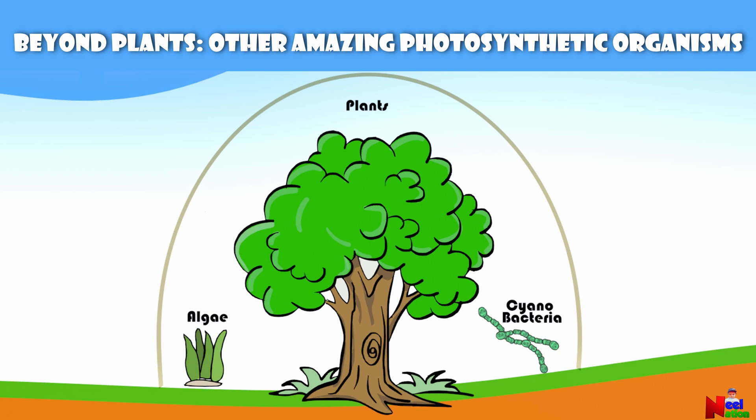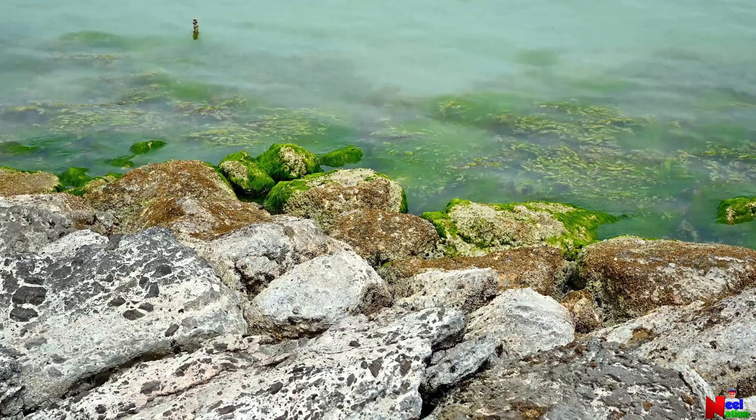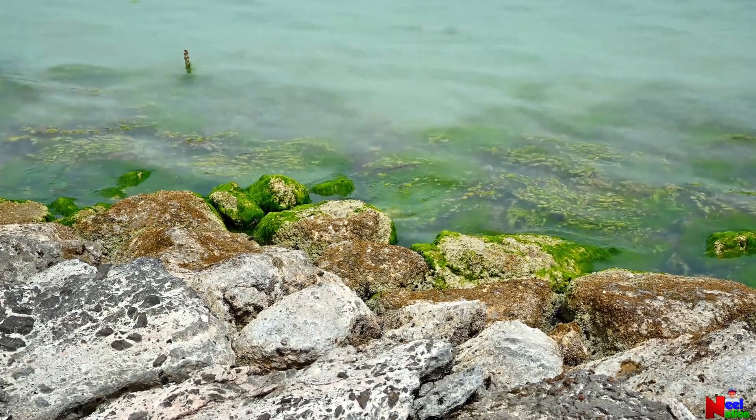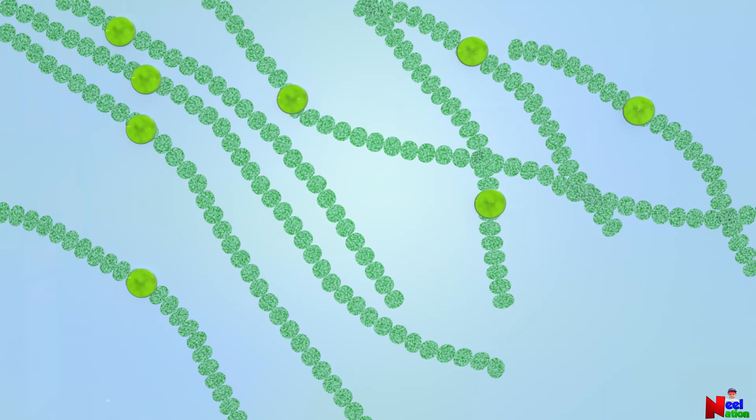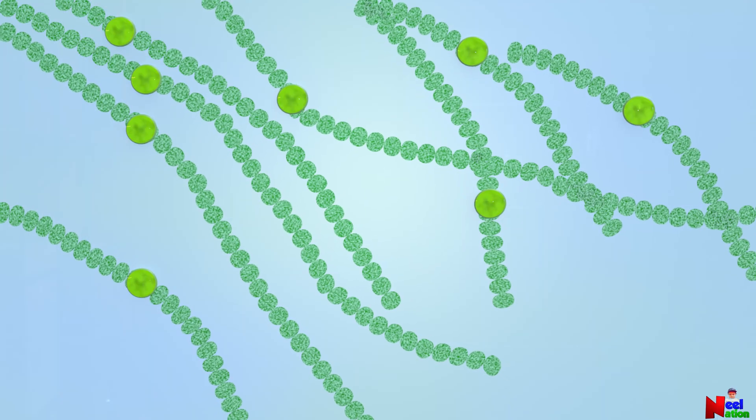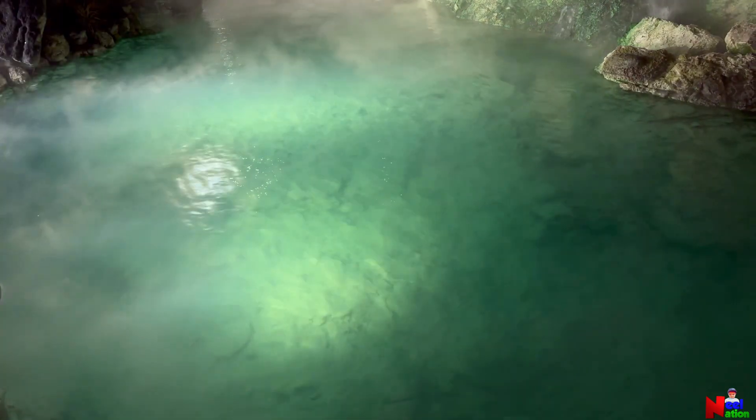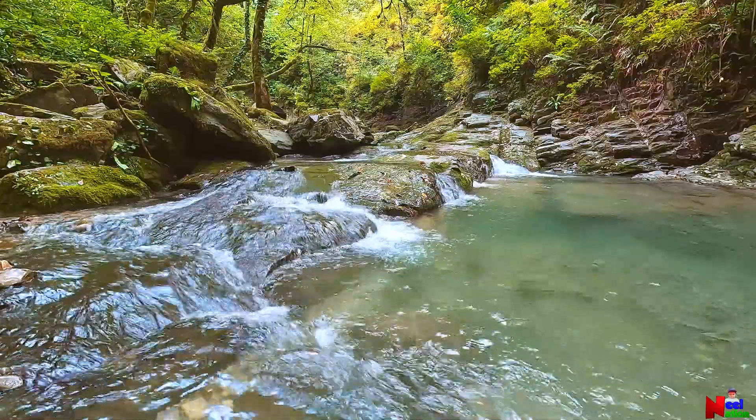While plants are the most familiar, there are other amazing photosynthetic organisms that play a big role in supporting life on earth. These include algae and cyanobacteria. Algae live in water, like ponds, lakes and oceans. They can be very tiny, like little specks, or big like seaweed. Just like plants, algae use sunlight to make their own food. Cyanobacteria are tiny single cell organisms that live in water and even in extreme environments like hot springs. They are one of the oldest photosynthetic organisms on earth and helped create the oxygen-rich atmosphere we breathe today.